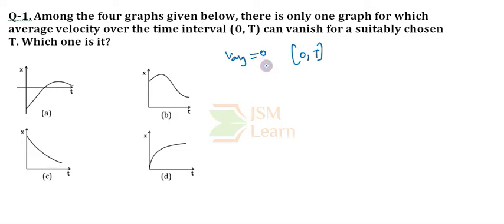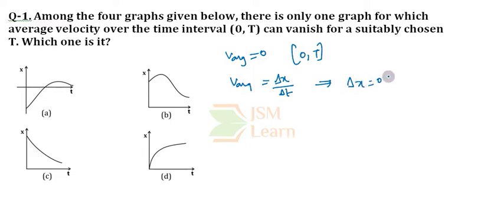Average velocity is becoming 0 — what does it mean? Average velocity is nothing but total displacement divided by total time interval. So average velocity will be 0 when displacement is 0. Displacement will be 0 when the displacement of the final point and the displacement of the initial point are both equal. Then the displacement will be 0.